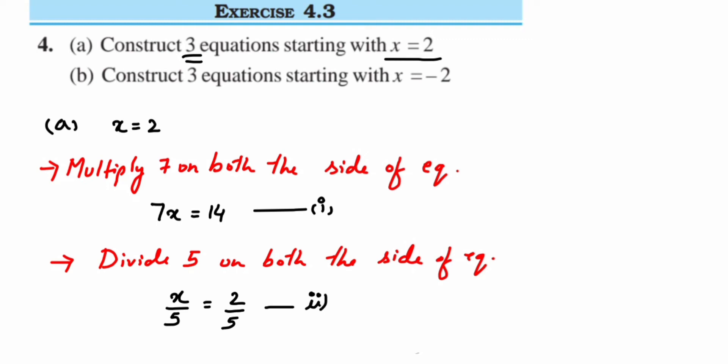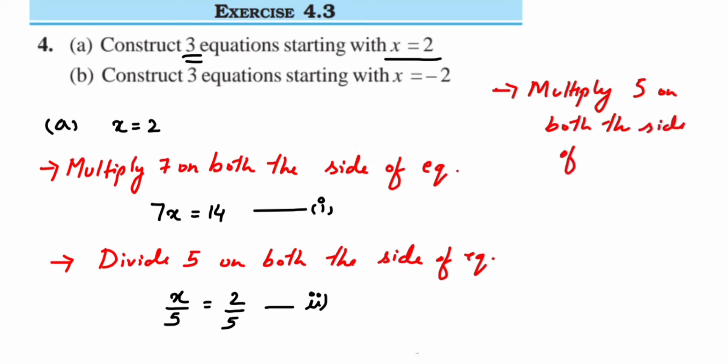Now I can make it more complex by adding a few more steps. Starting again with x = 2, I'm going to multiply by a certain number and then add or subtract to make a different equation. For the third one, I'll multiply both sides by 5, which gives me 5x = 10.